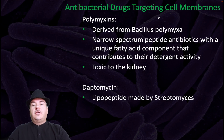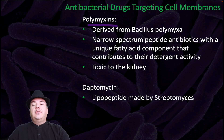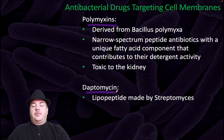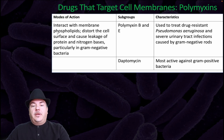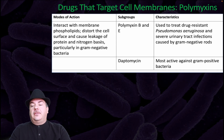Antimicrobial drugs targeting cell membranes include polymyxins, derived from Bacillus polymyxa. They have narrow-spectrum peptide antibiotics with a unique fatty acid component that contributes to their detergent activity; however, they are toxic to the kidney. We also have daptomycin, made by Streptomyces. These drugs interact with the membrane phospholipids, distort the cell surface, and cause leakage of protein and nitrogen bases, particularly in gram-negative bacteria.